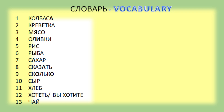Словарь — Vocabulary. Колбаса. Креветка. Мясо. Оливки. Рис. Рыба. Сахар. Сказать. Сколько. Сыр. Хлеб. Хотеть — Вы хотите. Чай.